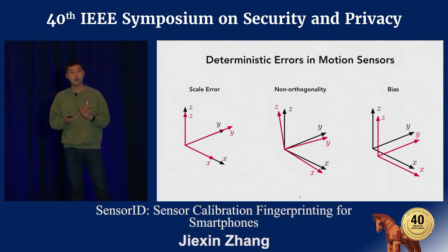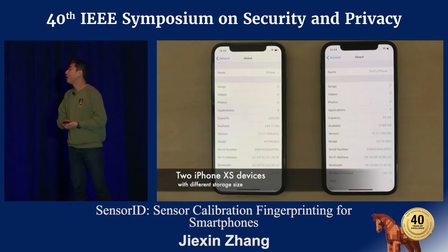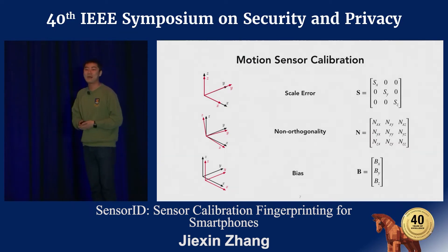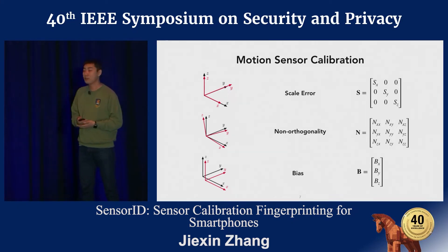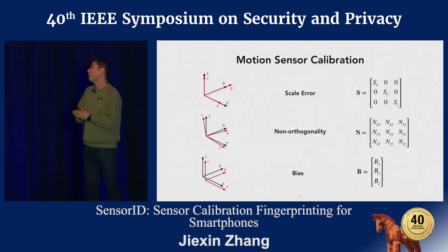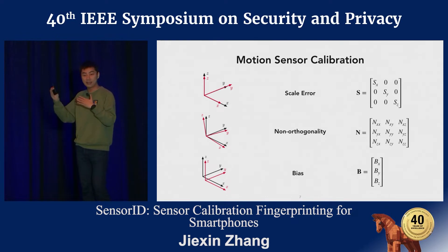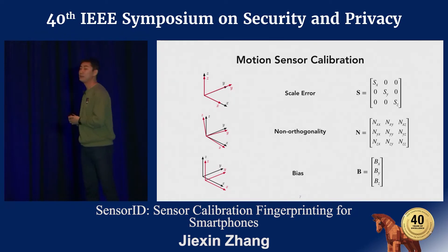Good sensor accuracy is often crucial. Therefore, some manufacturers may choose to do factory calibration to compensate for these types of errors. In particular, three different types of calibration matrices would be calculated. Each of them corresponds to one type of error. During factory calibration, after the manufacturer obtains these matrices, they bake this data into the non-volatile memory of the device. This data will not be changed afterwards, which means it's consistent over time.